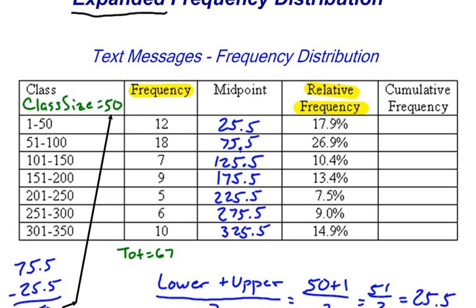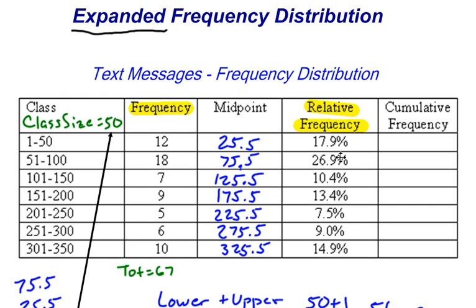Now the last part of our expanded frequency distribution is cumulative frequency. And what you do with cumulative frequency is you just start with each class and you add them up as you go. You accumulate them.